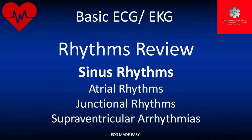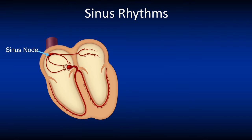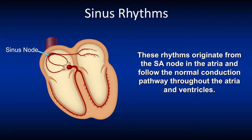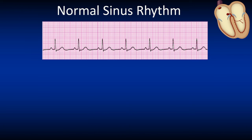Let's start with the review of sinus rhythms. Sinus rhythms originate from the SA or sinus node and follow the normal conduction pathway throughout the atria and ventricles. The rate for a normal sinus rhythm is 60 to 100 per minute, as it originates from the SA node which fires at a rate of 60 to 100.